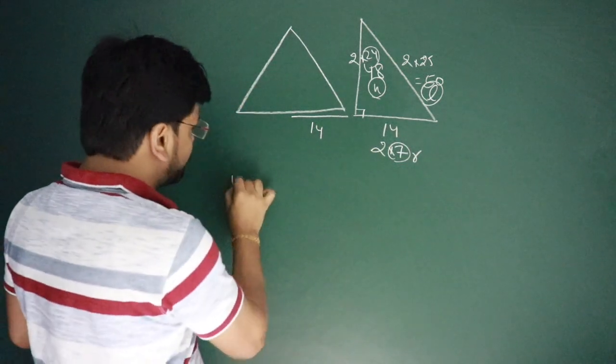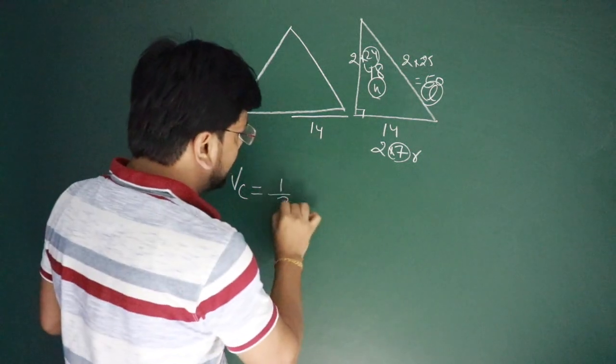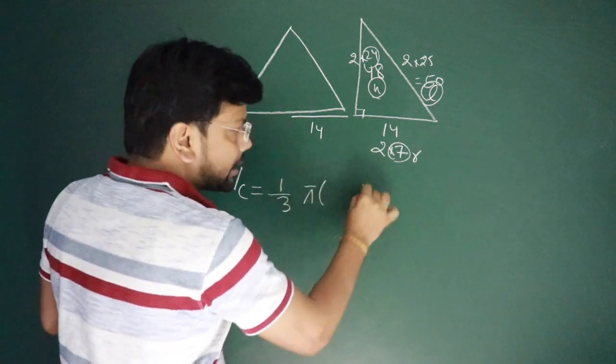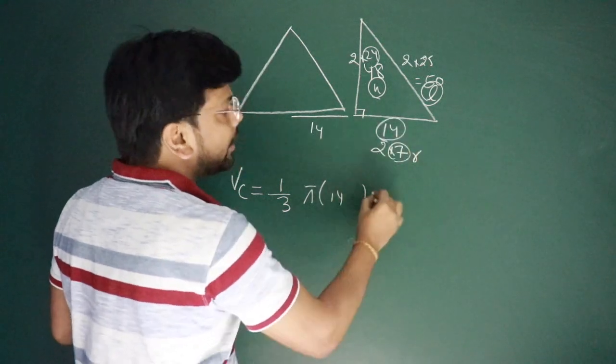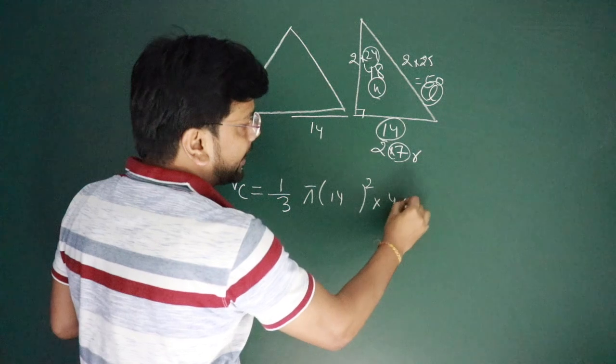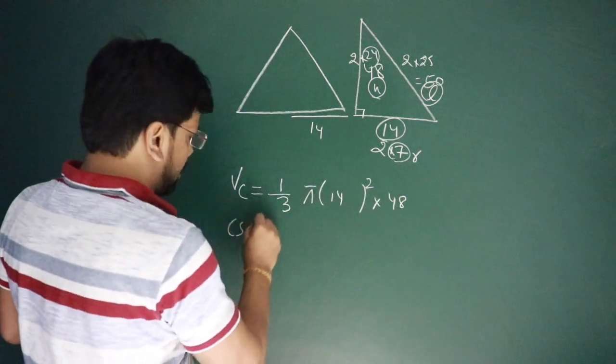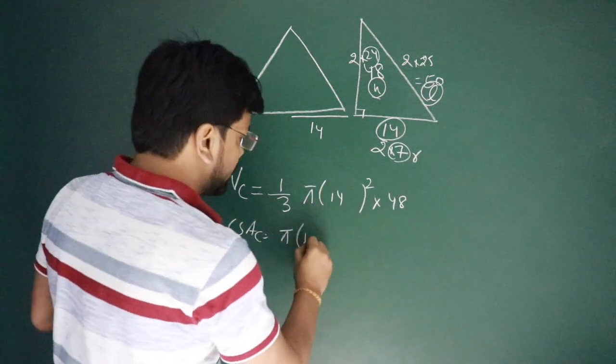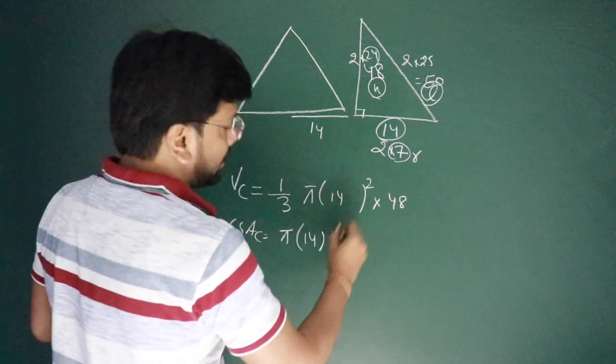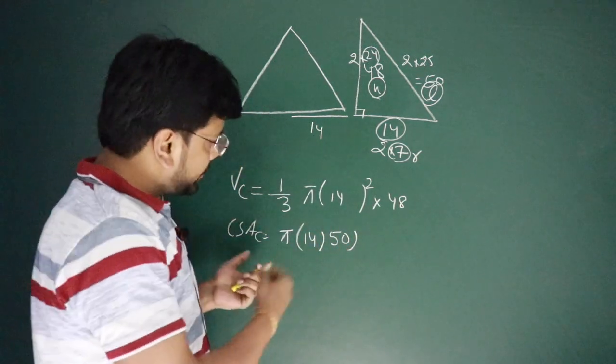First, I'll calculate the volume of the cone. Volume of the cone is 1/3 π r² h, which in this case is 1/3 π (14)² (48). Then we calculate the curve surface area of the cone, that is π r l, which is π (14)(50). So we have calculated the volume and curve surface area of the cone.